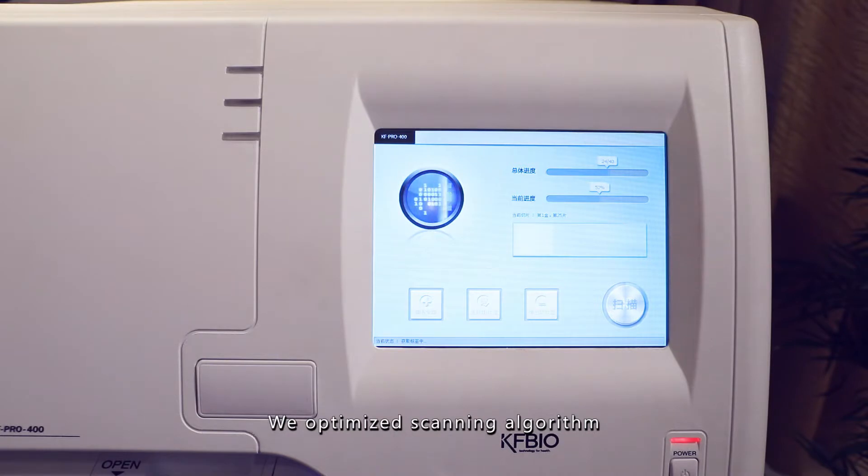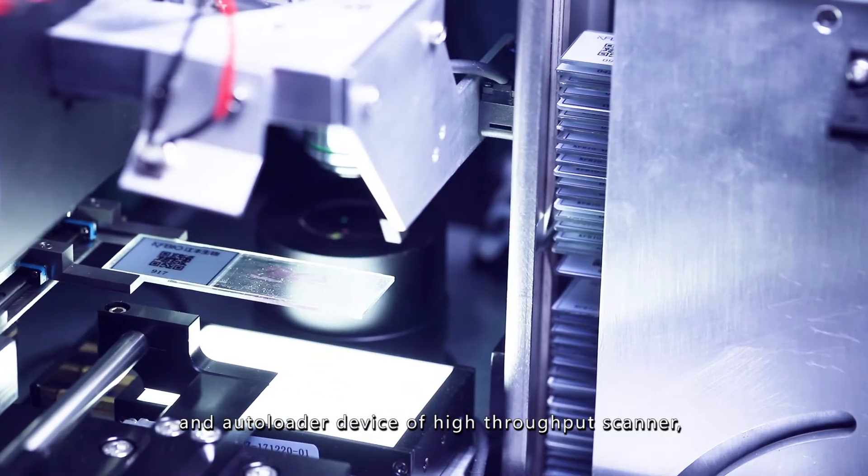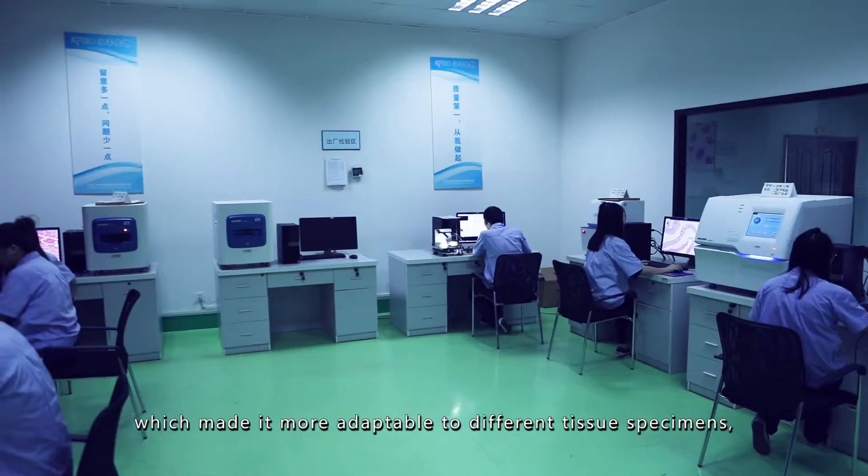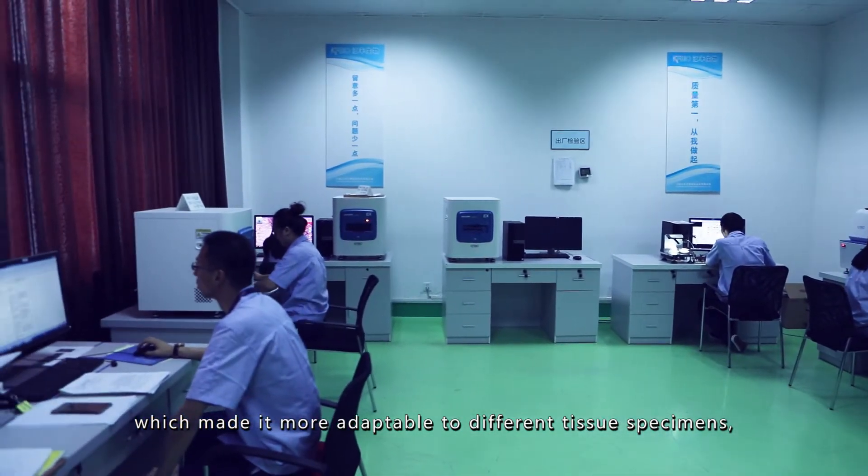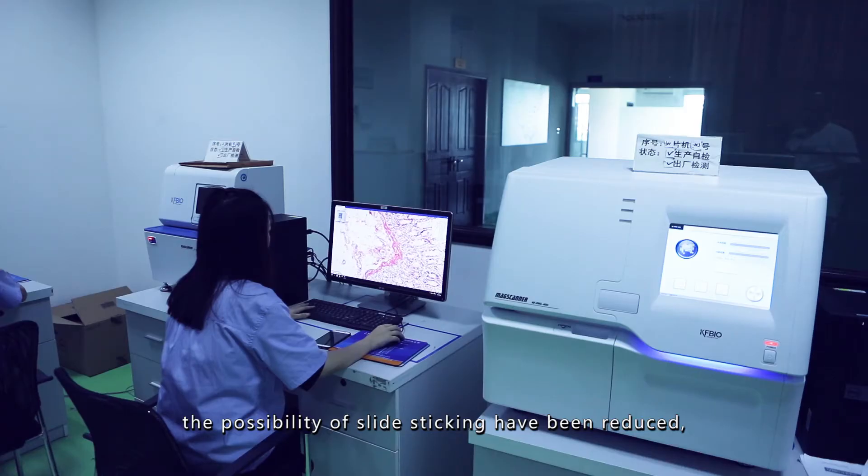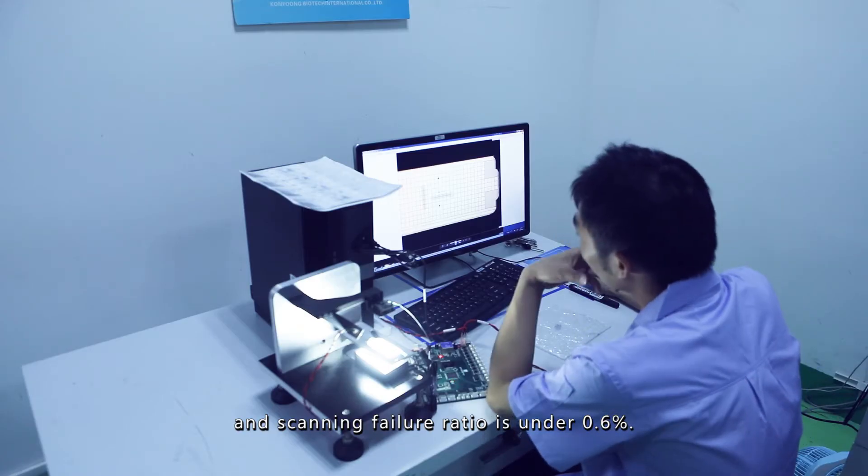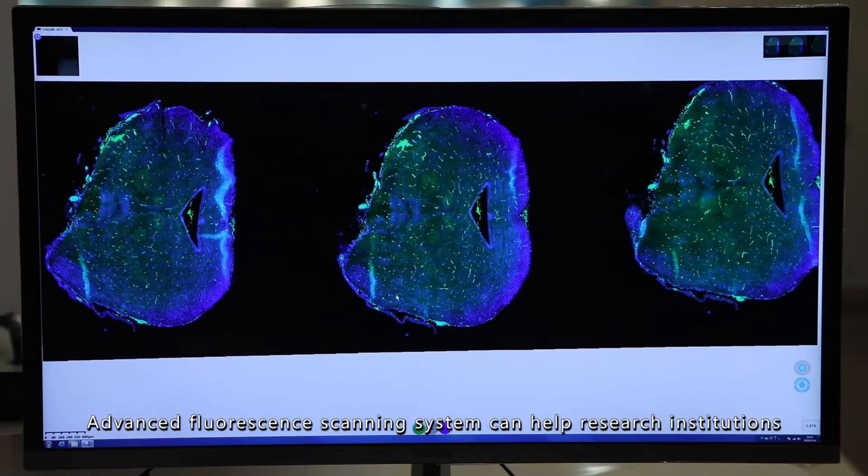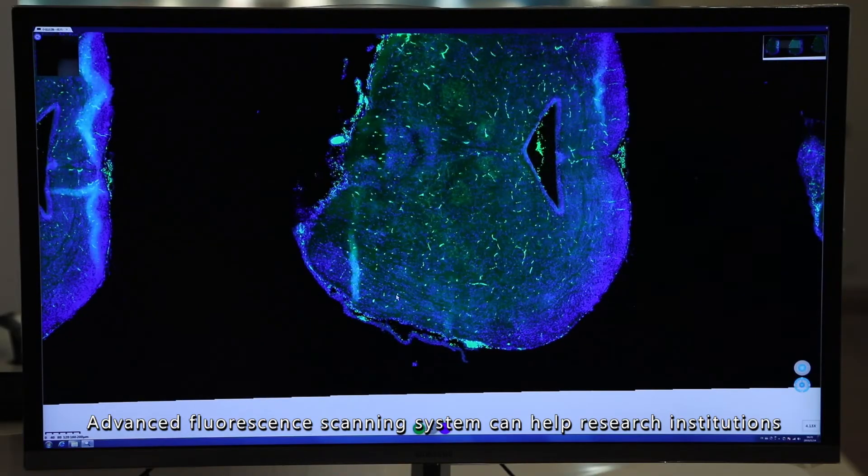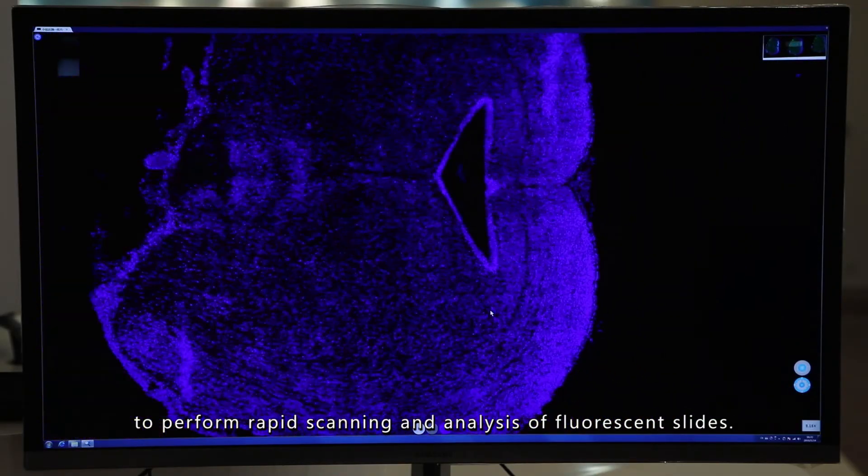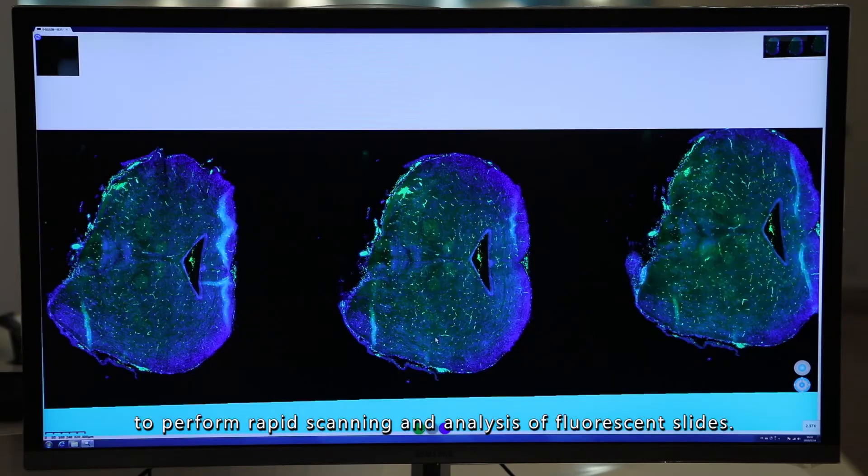We optimize scanning algorithm and auto-loader device of high-throughput scanner, which made it more adaptable to different tissue specimens. The possibility of slide sticking has been reduced, and scanning failure ratio is under 0.6%. A vast fluorescence scanning system can help research institutions to perform rapid scanning and analysis of fluorescence slides.